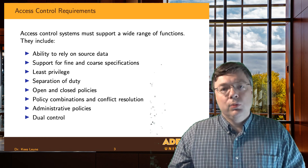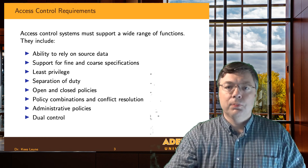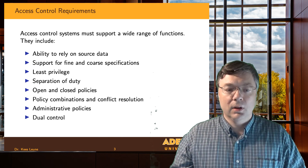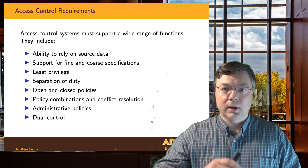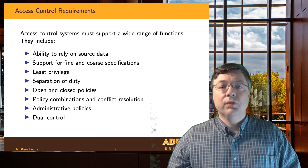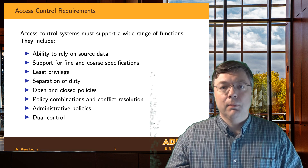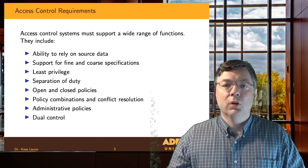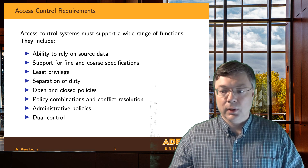We want to be able to combine policies, stacking them — one policy applies to the general population, another to students, another to employees. That's called policy combination. But there might be conflicts: someone could be both a student and an employee. How do we resolve a potential conflict in policies? An access control system must take care of that as well.